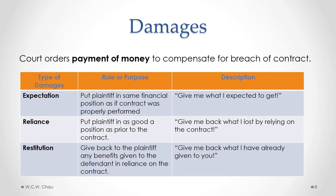This is a chart that summarizes a number of different kinds of damages. The types of damages highlighted in red — which we will examine — are expectation damages, nominal damages, liquidated damages, and punitive damages.